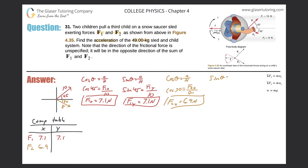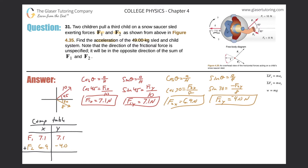For F2y, we use sine. Sine of theta equals opposite over hypotenuse, but the y component is in the negative direction, so sine of 30 equals negative F2y over 8. Sine of 30 is 0.5, so F2y equals negative 4.0 newtons. Add that to the table. Now summing the components: x-total equals 7.1 plus 6.9 equals 14.0, and y-total equals 7.1 minus 4.0 equals 3.1.